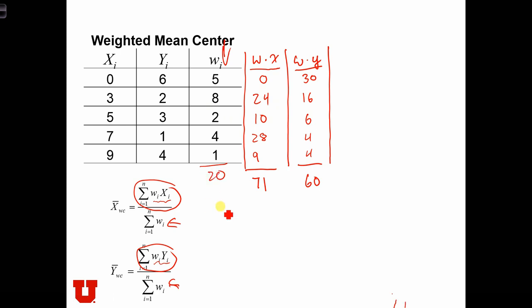So we have the weighted centroid in the x dimension is 71 over 20. And the weighted centroid in the y dimension is 60 over 20, which equals 3. This is equal to about 3 and a half. I'll put a squiggly there because it's not quite equal, just about equal.